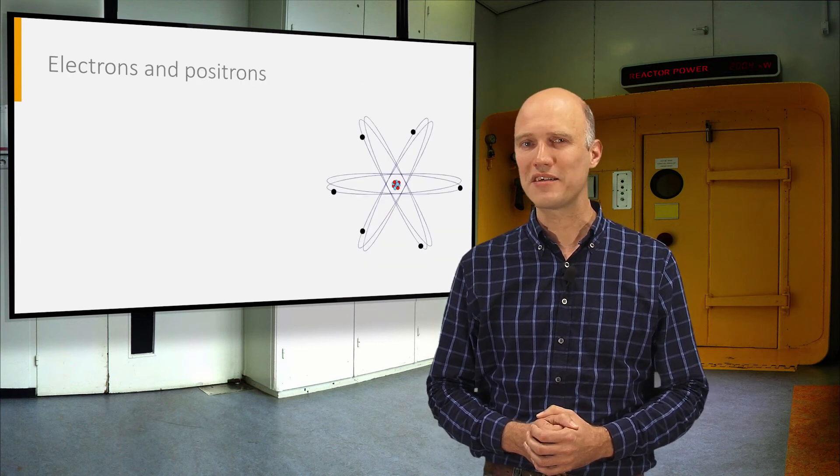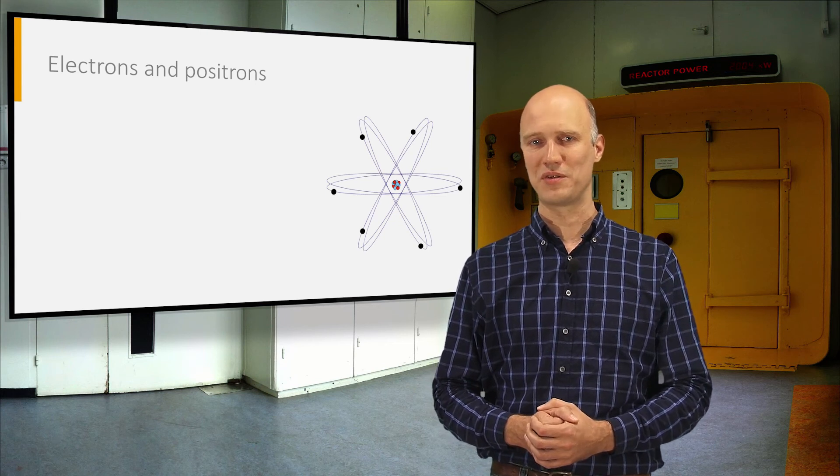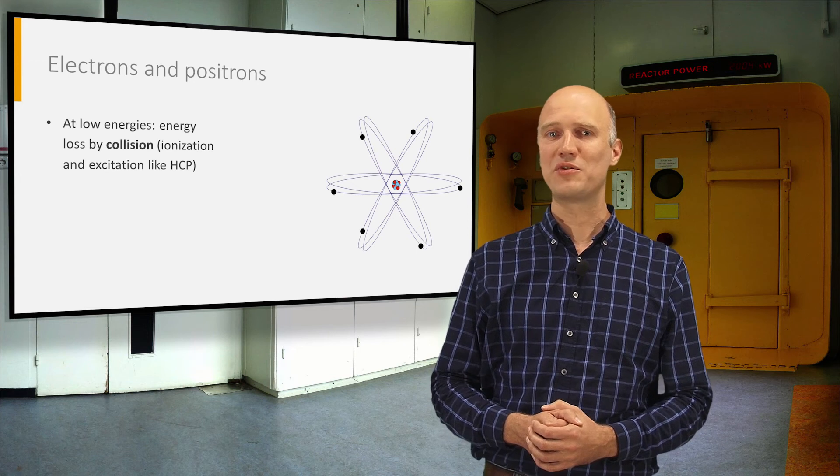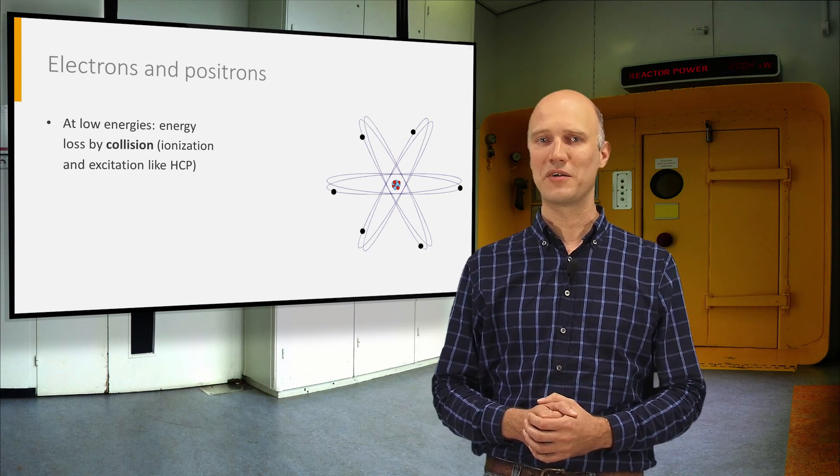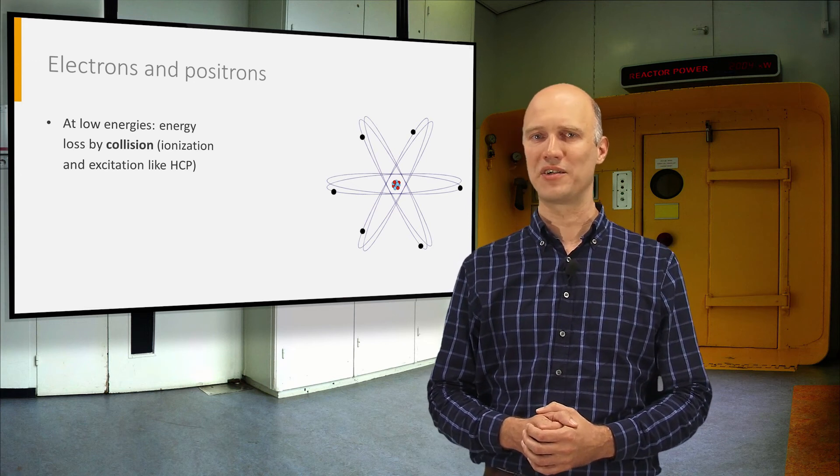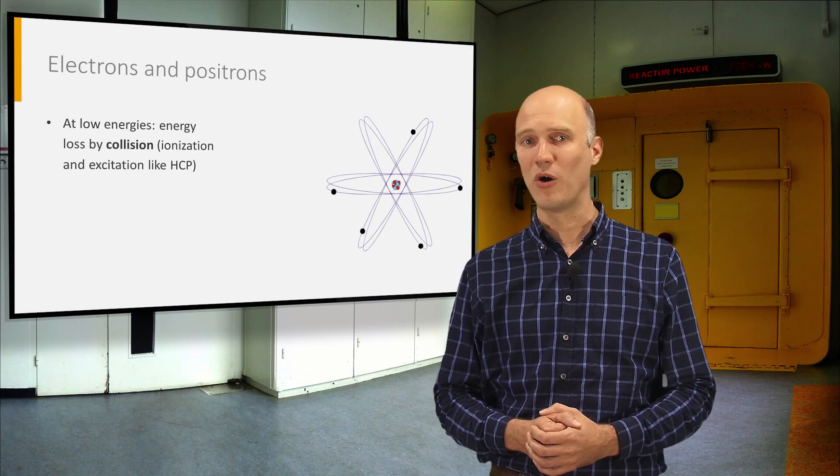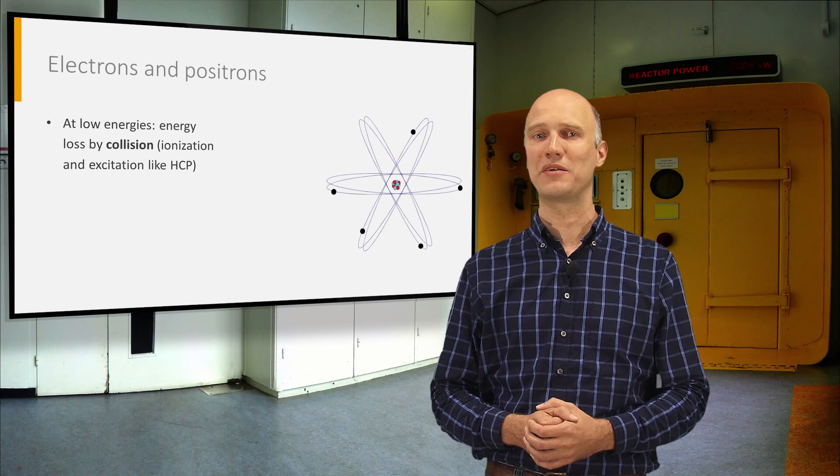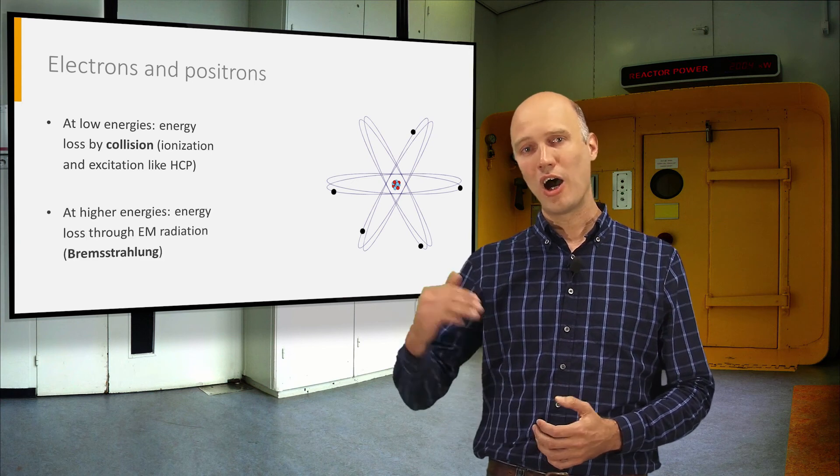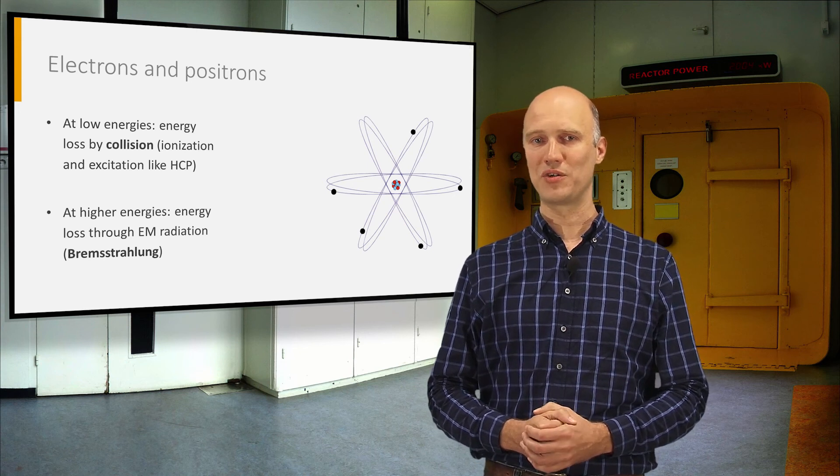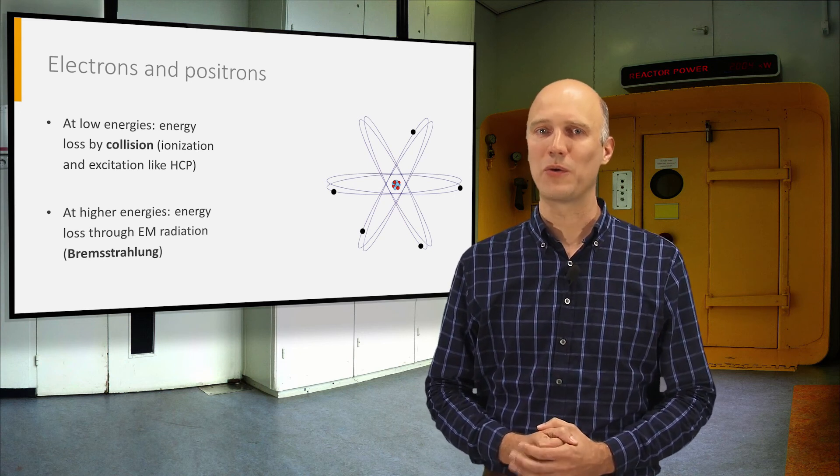To conclude, let's have a look at electrons and positrons. At lower energies, they lose their energy through collisions when passing through matter, just like heavy charged particles do. During these collisions, they can excite or ionize the atoms in the matter they pass through. Above a certain critical energy, an additional energy loss mechanism becomes important: bremsstrahlung.